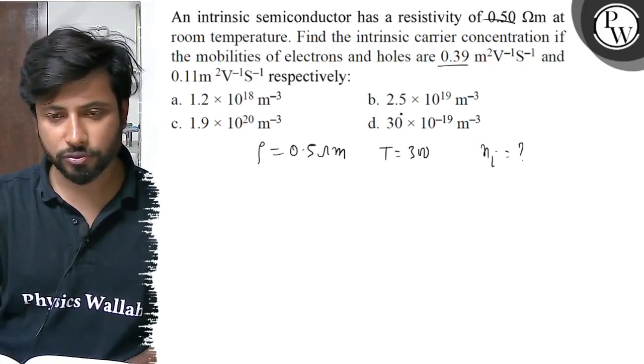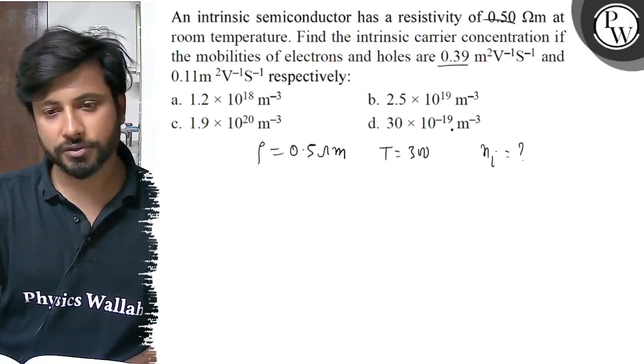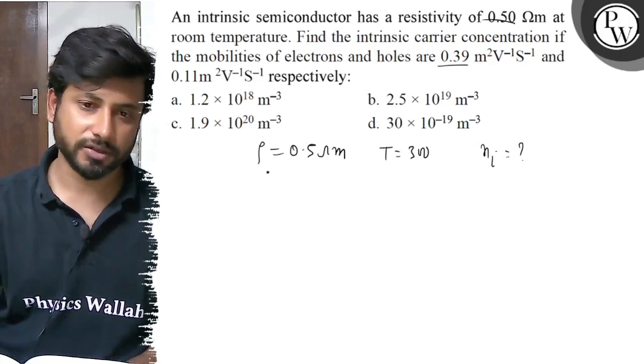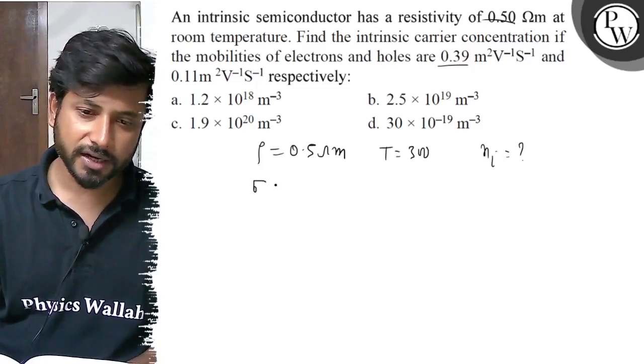Option b: 2.5×10¹⁹ m⁻³. Option c: 1.9×10²⁰ m⁻³. Option d: 3.0×10⁻¹⁹ per meter cube. Okay, now you have got conductivity sigma equals to ni·e(μe + μh).